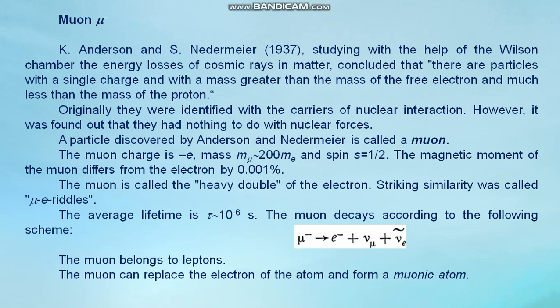Muon. Anderson and Nedermeyer in 1937, studying with the help of the Wilson chamber the energy losses of cosmic rays in matter, concluded that there are particles with a single charge and with a mass greater than the mass of the free electron and much less than mass of the proton. Originally, they were identified with the carriers of the nuclear interaction. However, it was found out that they had nothing to do with nuclear forces. A particle discovered by Anderson and Nedermeyer is called a muon.